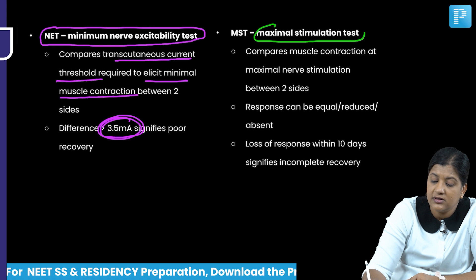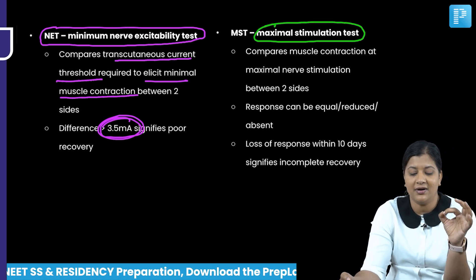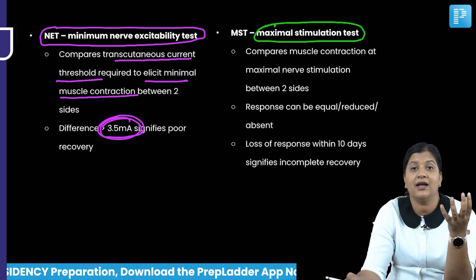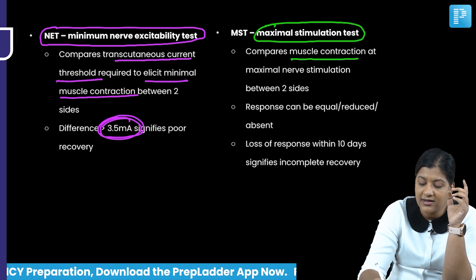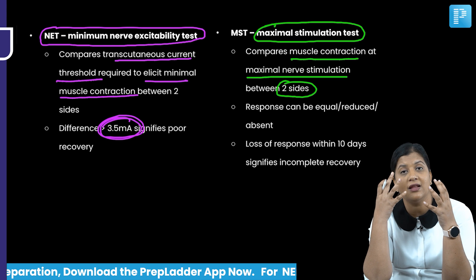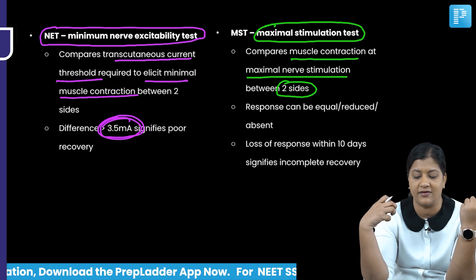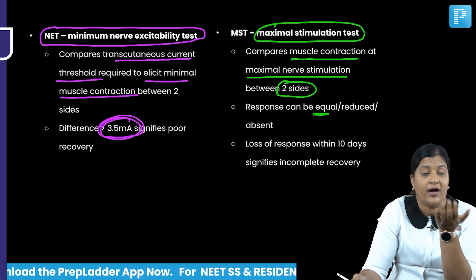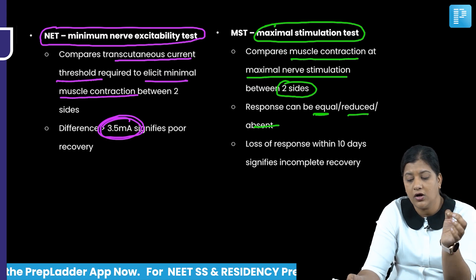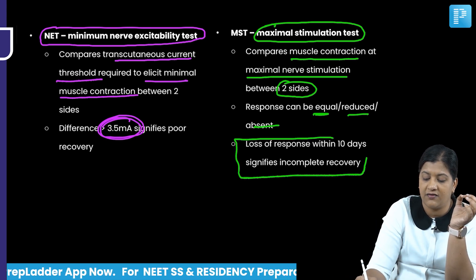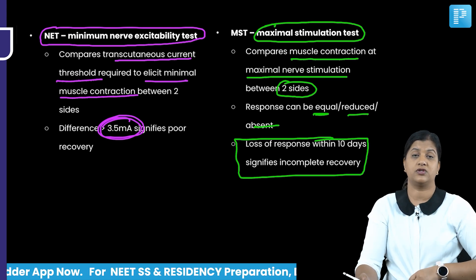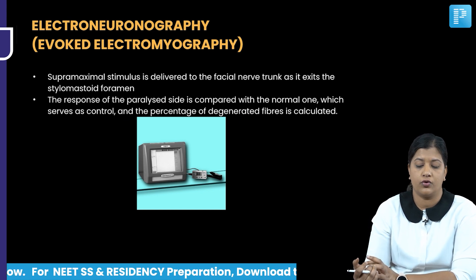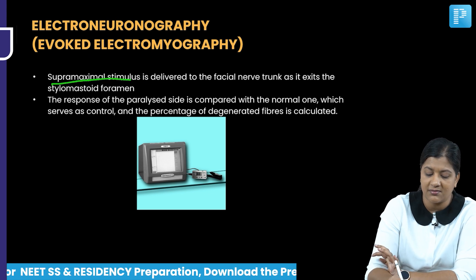The maximal stimulation test compares muscle contraction at maximal nerve stimulation between both sides. Responses can be equal, reduced, or absent on one side. If there is a loss of response within 10 days, it signifies incomplete recovery.